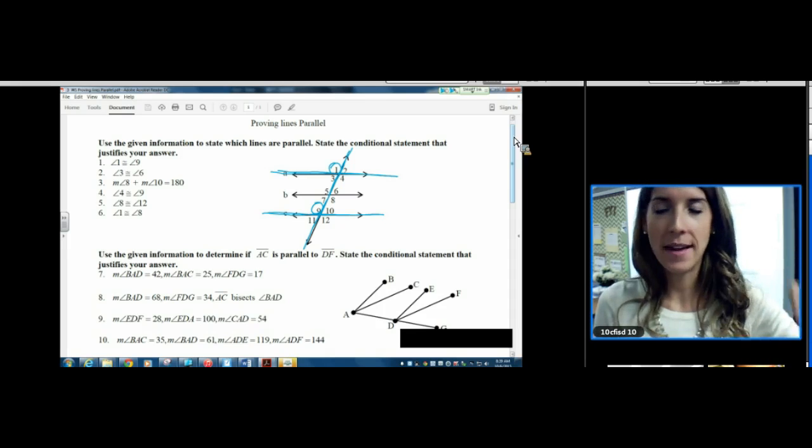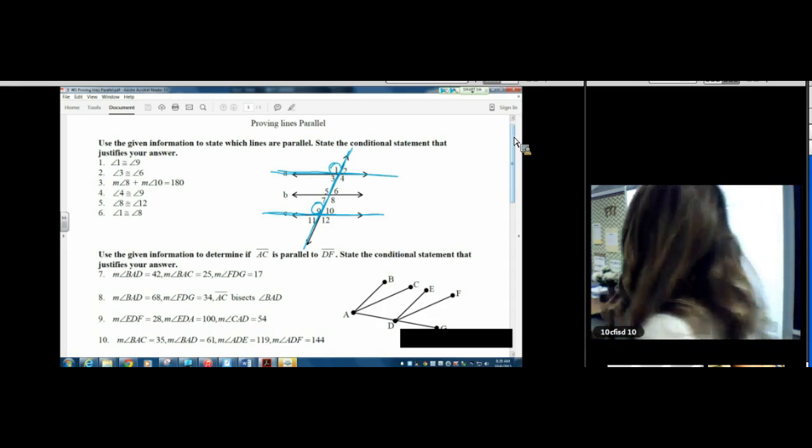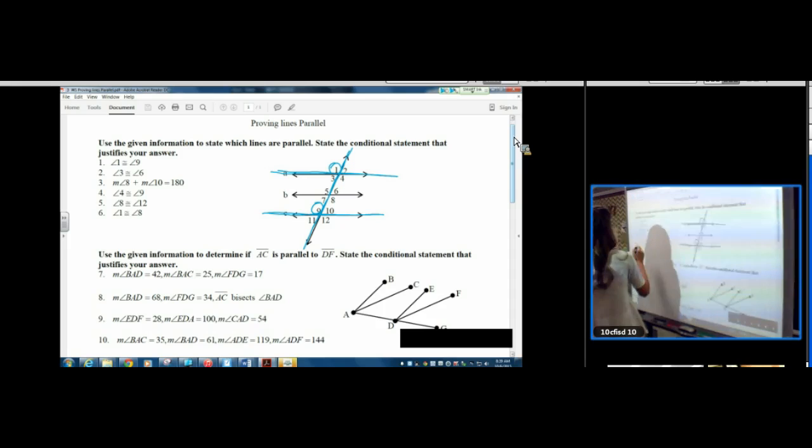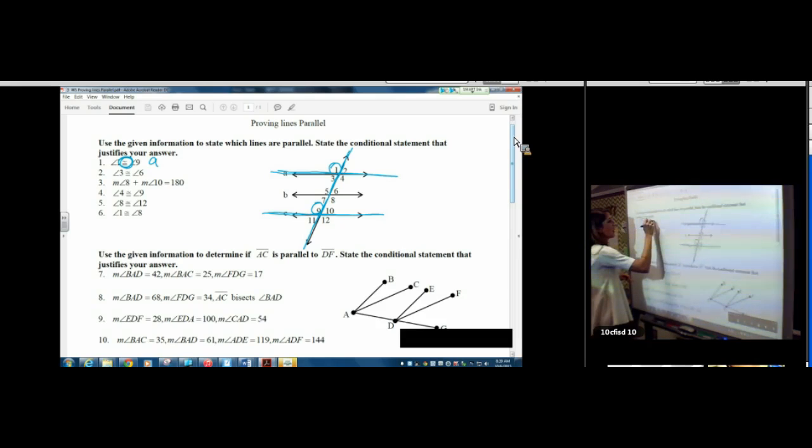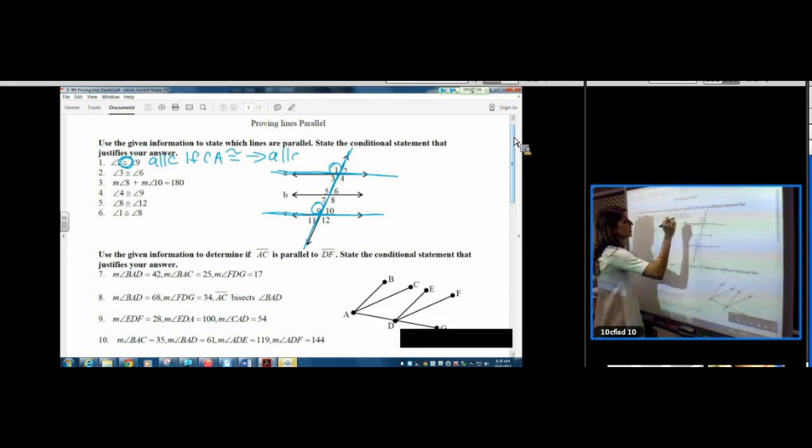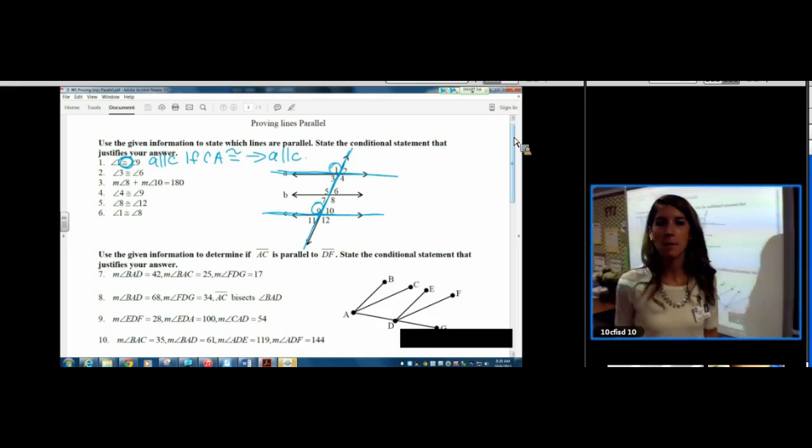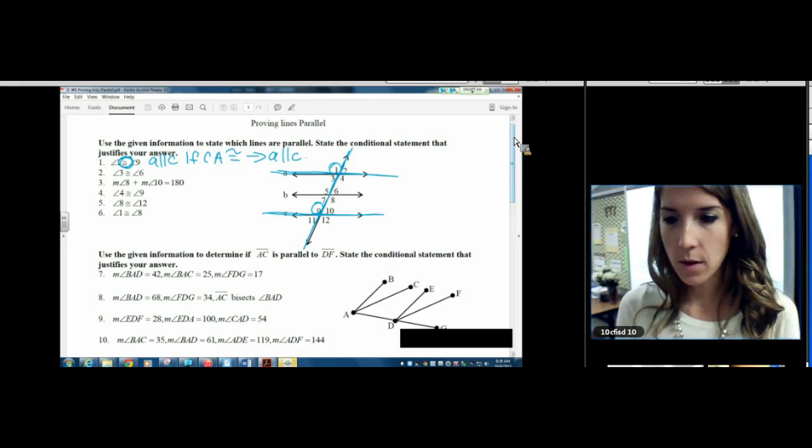Angle one and angle nine are corresponding angles. You studied your vocab last night. You know your vocab upside down and inside out. Corresponding angles are supposed to be congruent. And look at that. They're congruent. So A is parallel to C. If corresponding angles are congruent, then A is parallel to C. So that's the statement that you would write for number one.